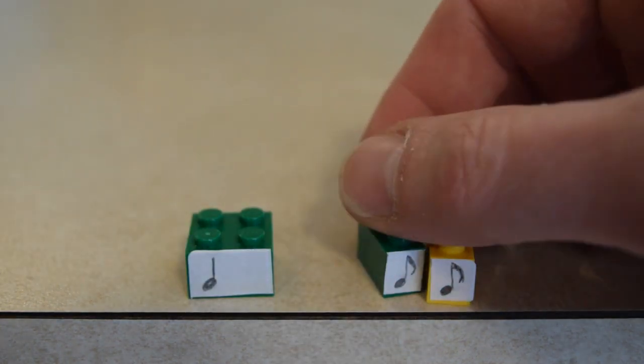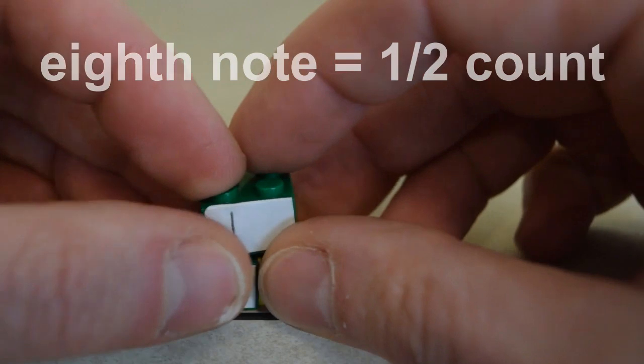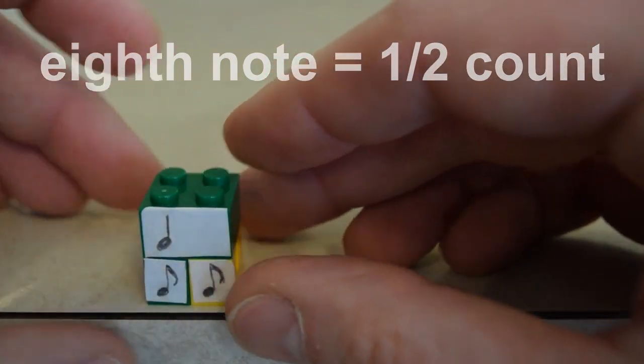Eighth notes are half the value of a quarter note, and we know that two of those equal one quarter note, so we can show that by placing our quarter note brick on top of those two.